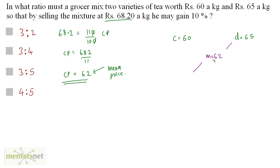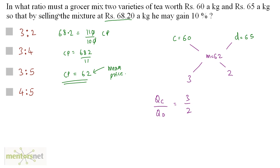On the left-hand side we have 65 minus 62, which is 3. On the right-hand side we have 62 minus 60, which is 2. So the ratio of the quantity of the cheap variety to the quantity of the costlier variety is 3 to 2. So the ratio is 3:2 — Option A.